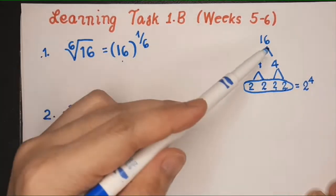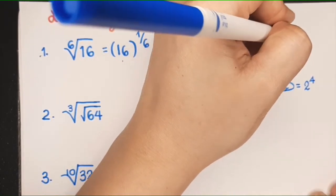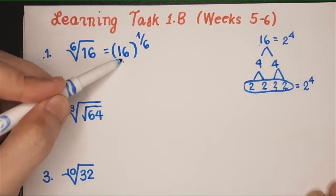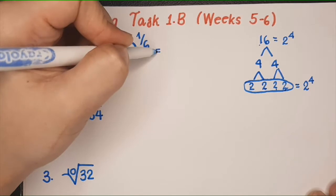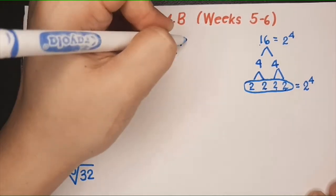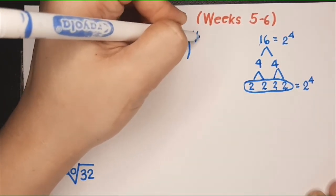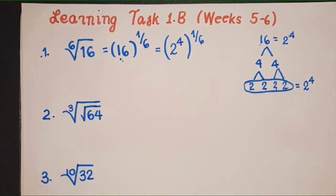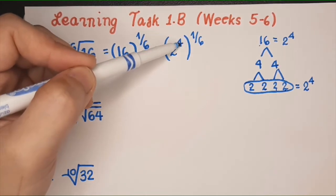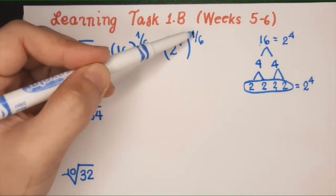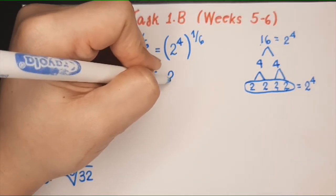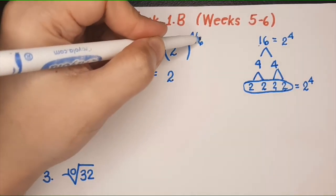So 16 is equal to 2 raised to 4. I'm going to replace 16 here — I'm going to write 2 raised to 4. That's 16, and then this one is raised to 1 over 6. You recall the laws of exponents: if you have a power raised to another power, you multiply them. So you're going to have 2 raised to — what is 4 times 1 over 6?